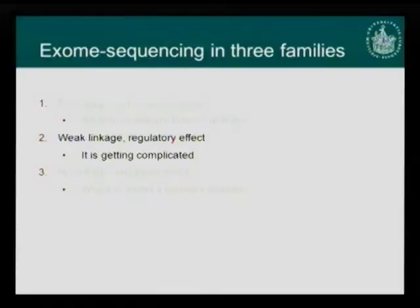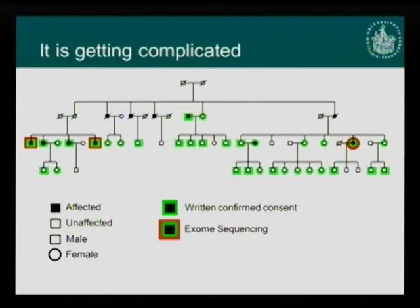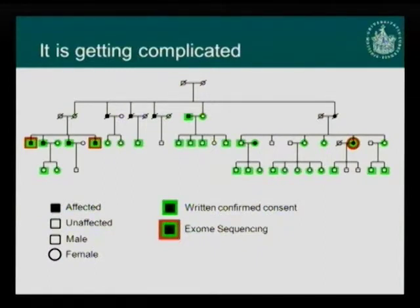My second example is a family where we actually had a weak linkage result, which we however did not use when analyzing the exome data. Again, this is a severely affected family and we selected three distantly related family members for exome sequencing, in order to reduce the number of variants shared simply due to relatedness rather than disease specificity.